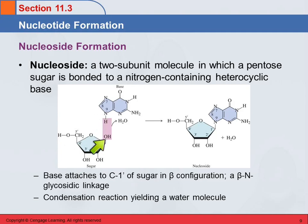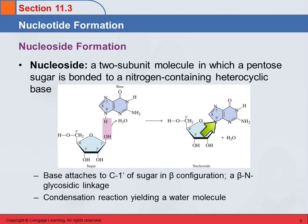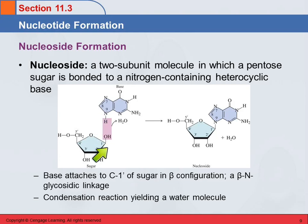And we form this linkage between the ninth nitrogen — they've numbered these for you here — so it's nitrogen number nine and the one-prime oxygen. It's always in the beta configuration, and so what we end up with is a beta-N glycosidic linkage. So this is always going to be sticking up — a glycosidic linkage.